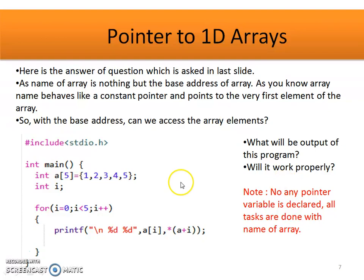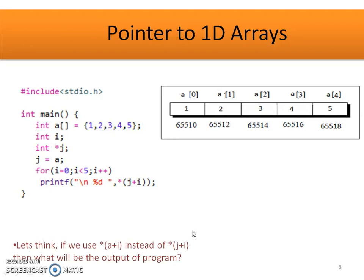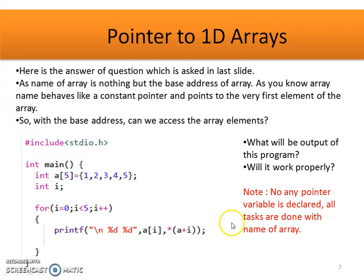With the help of value at address base address plus i, we can access all elements of the array. In the previous example we used a Pointer type variable j to perform the task, but in this example we are not using any Pointer type variable. No pointer variable is declared — all tasks are done with the name of the array itself.